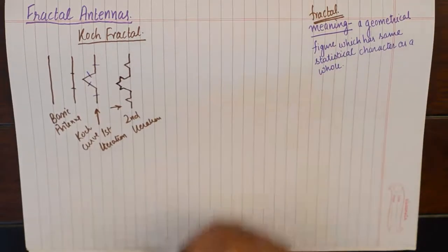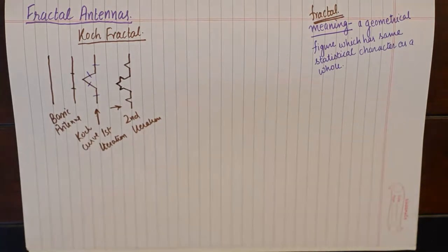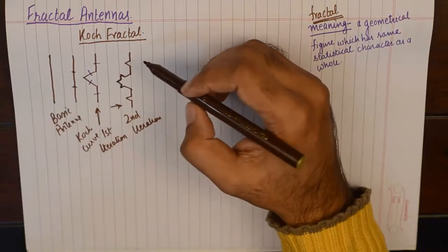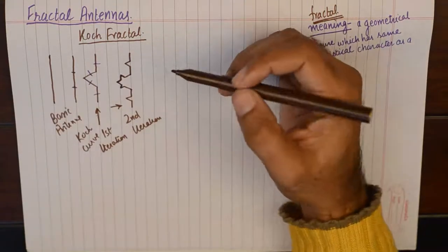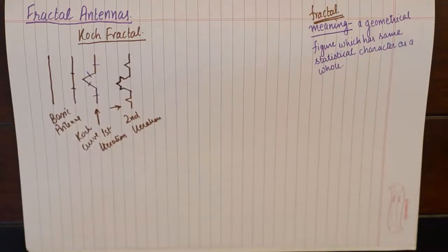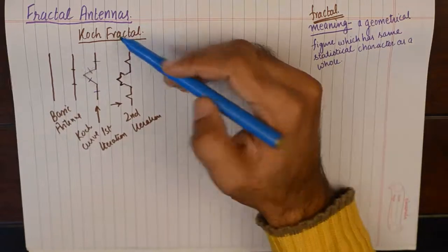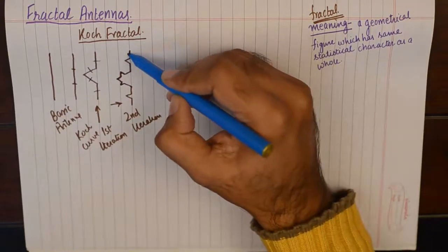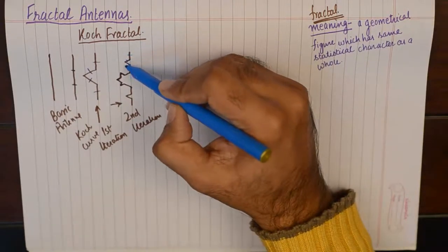If I make a third iteration of this antenna, I will have a lot of straight lines — sixteen in total. These sixteen straight lines will be very very small, but I can still divide them into three parts, take the middle third, and insert a bent wire in each of them.